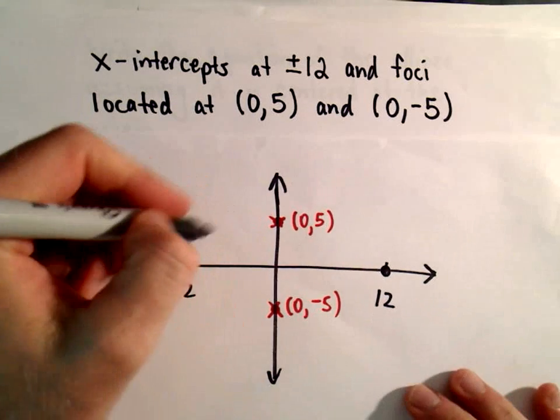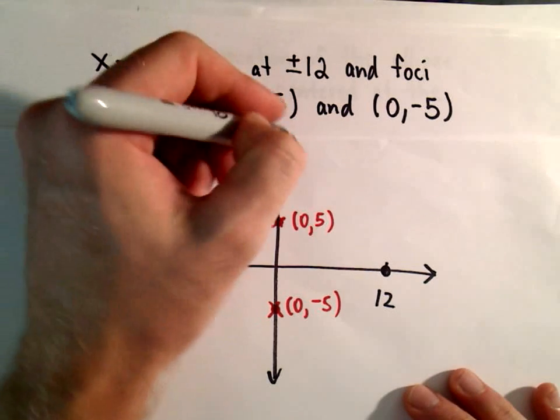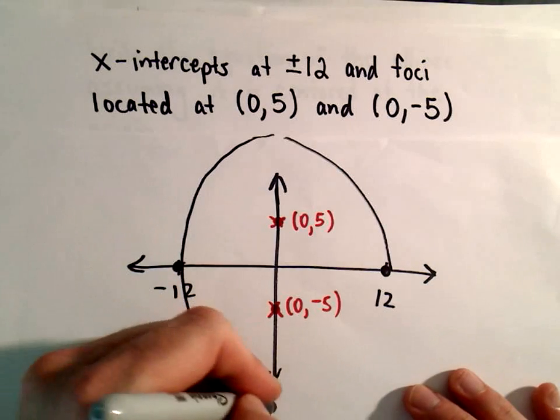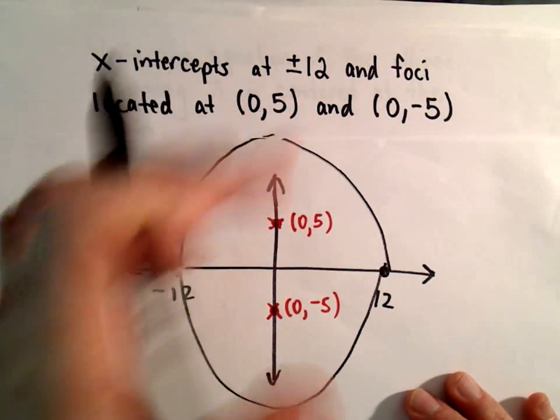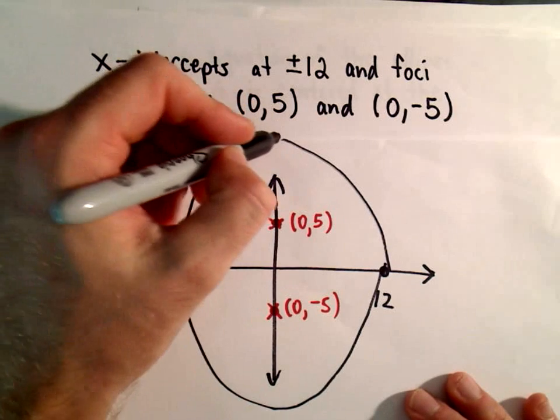So I know my ellipse is going to go up to some point and then come back down, and do the same thing down here. Our point is we still have to figure out the equation, but that's the idea.